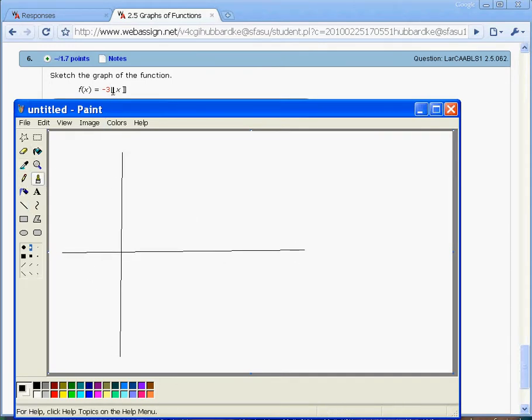Well, if f of x, you plug in 0, right, you get out negative 3 times the floor of 0, right.